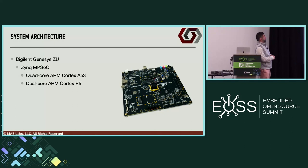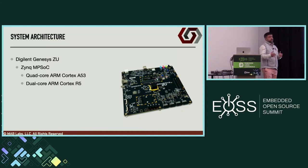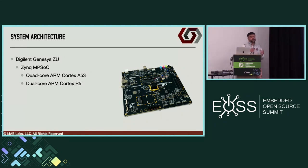Talking about the specifics of this project — I did it on different pieces of hardware because the original hardware was custom and proprietary. I used a commonly available development board, the Digilent Genesys ZU, which has a Zynq MPSOC — essentially a quad-core Cortex-A and a dual-core Cortex-R. This is a Cortex-R, which is meant for real-time operations, not the Cortex-M we saw in the earlier silicon examples.